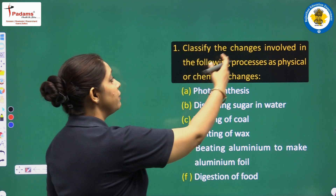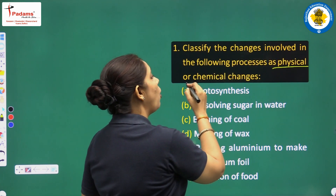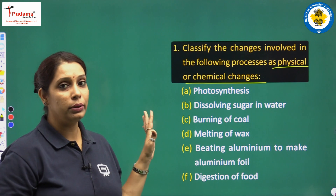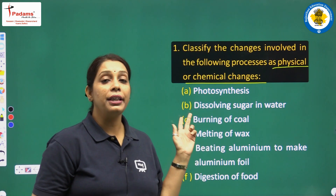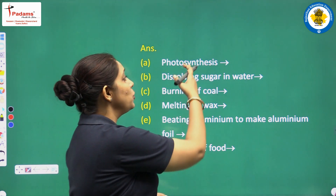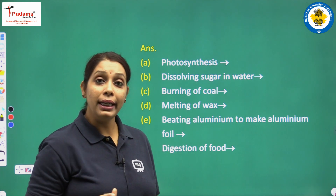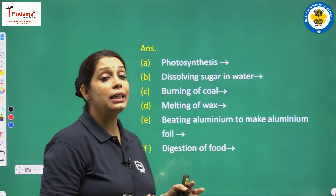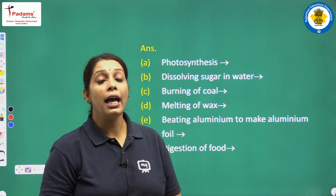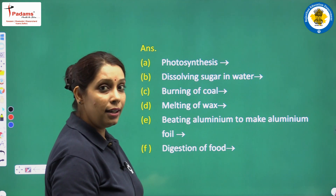Question number 1: classify the changes involved in the following processes as physical or chemical changes. We have to read all these examples and write whether they are physical or chemical changes. First, photosynthesis — it is a chemical change. Why? Because in photosynthesis a new product is formed. Plants prepare their food by the process of photosynthesis and form their food in the form of carbohydrates and release oxygen. So it is a chemical change.